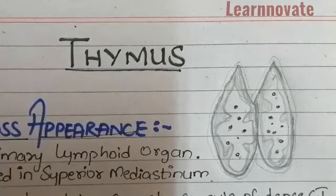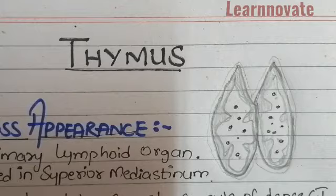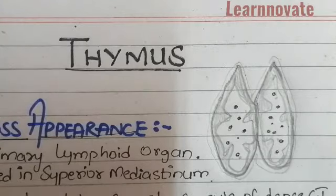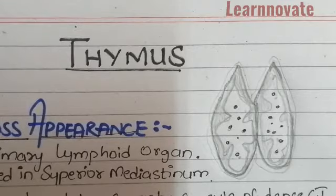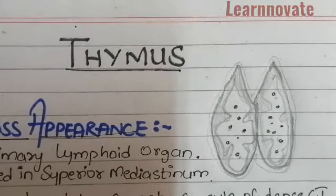Welcome to my channel LenaVh. Today we will be discussing some of the anatomical and histological aspects of the lymphoid tissues. The different types of lymphoid tissue in our body play a very important role in our immune system.